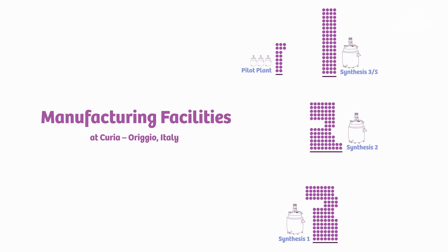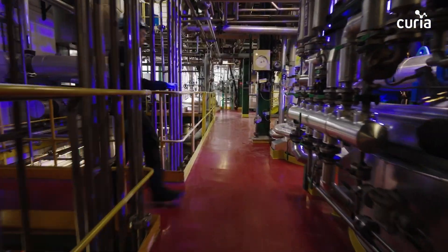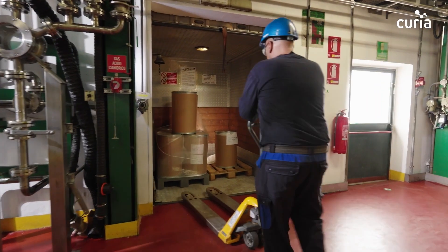In the core manufacturing facilities, batches are initiated when operators charge raw materials into reactors manually and via pipeline.